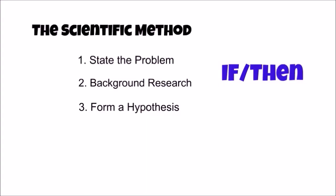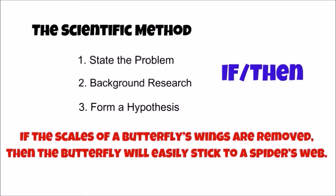For example, the butterfly scale hypothesis could be written as: if the scales of a butterfly's wings are removed, then the butterfly will easily stick to a spider's web.